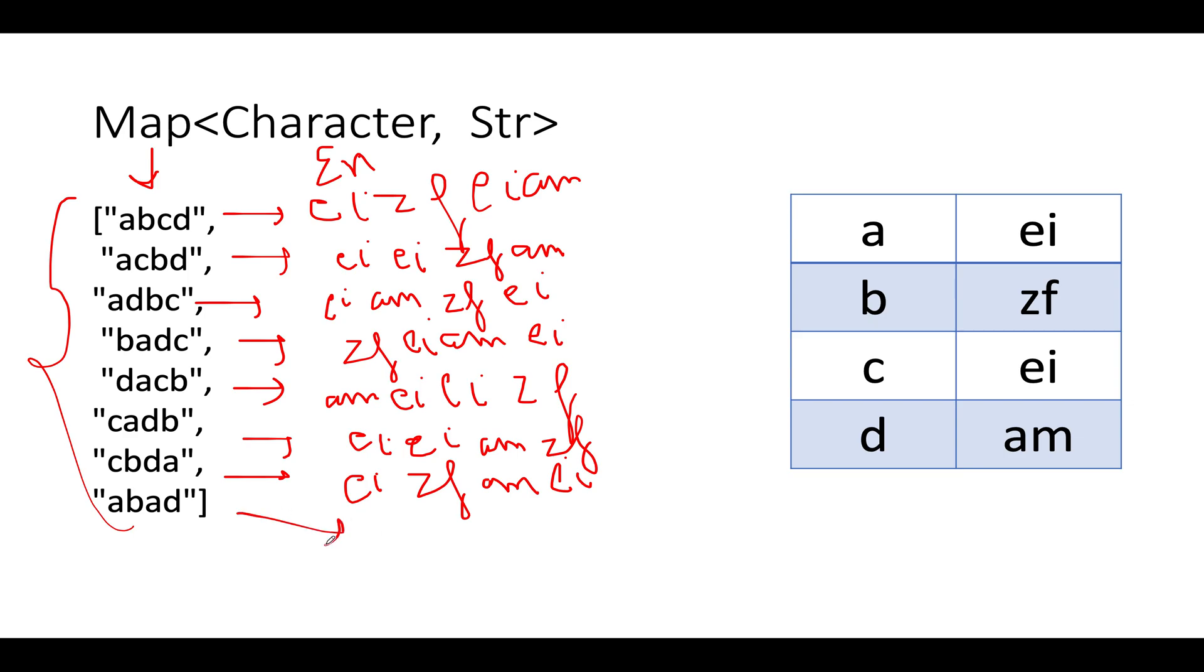Let's do it for the last one, ABAD, which is A points to E I, then we have B points to Z F, then we have A points to E I, then we have D points to AM.